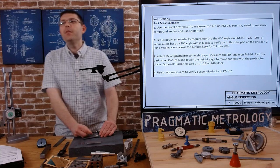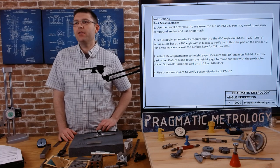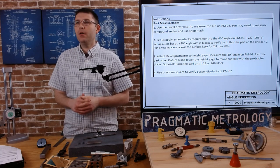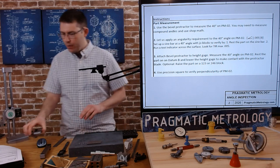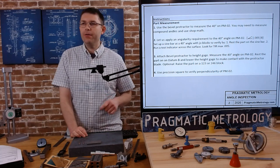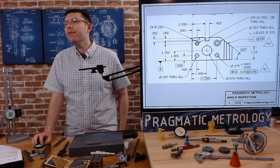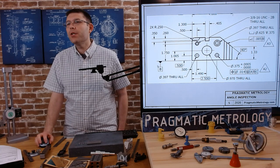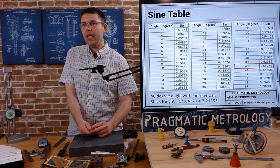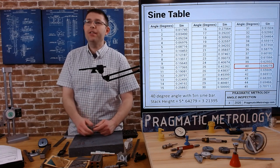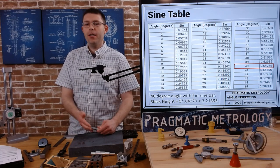Exercise two: we have an angularity requirement of five thousandths relative to datum B. Set it up on a sine bar and rest the part on the sine bar, then run a test indicator across the surface and look for 0.005 maximum TIR. Let's take a look at the print — the angularity is five thousandths relative to datum B, which is the bottom surface. To set up our sine bar we need to know a Joe block stack to build. I've done the math using a sine table, which you can find on the Pragmatic Metrology website. You can also just calculate the sine of 40 degrees on a calculator.